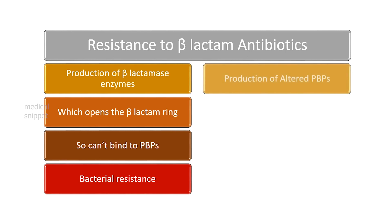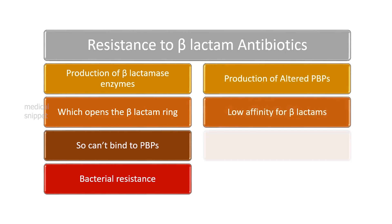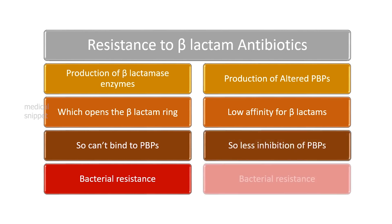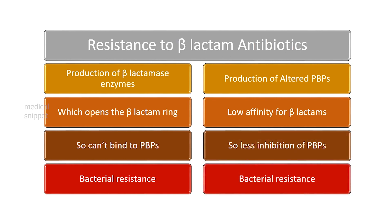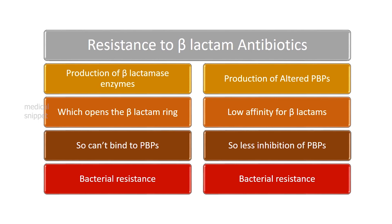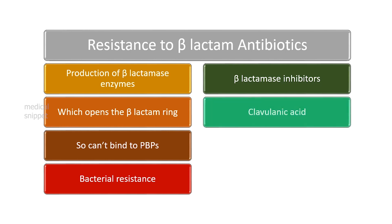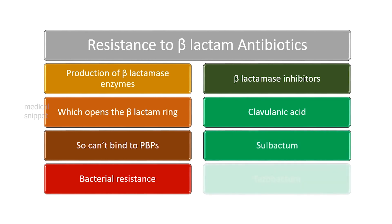The second mechanism is by production of altered penicillin-binding proteins, which have low affinity for beta-lactams, resulting in less inhibition of penicillin-binding proteins, and thus resistance to beta-lactams. Resistance via beta-lactamases can be overcome by combining beta-lactams with beta-lactamase inhibitors. There are three beta-lactamase inhibitors available for clinical use: clavulanic acid, sulbactam, and tazobactam.